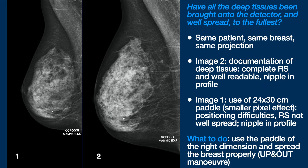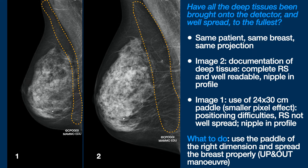Same patient, same projection. In both cases the retromammary space has been documented to the full. In the first one, however, using the larger paddle has created some trouble in positioning and in spreading of the deep tissue, which is not sufficient. There is a difference in size of the two breasts, due to the smaller pixel effect induced by the use of the bigger paddle. All this tissue is useless for diagnostic purposes and represents undue radiation exposure.